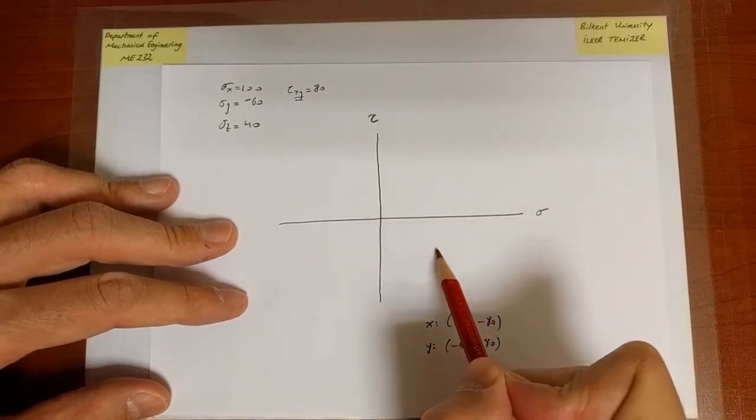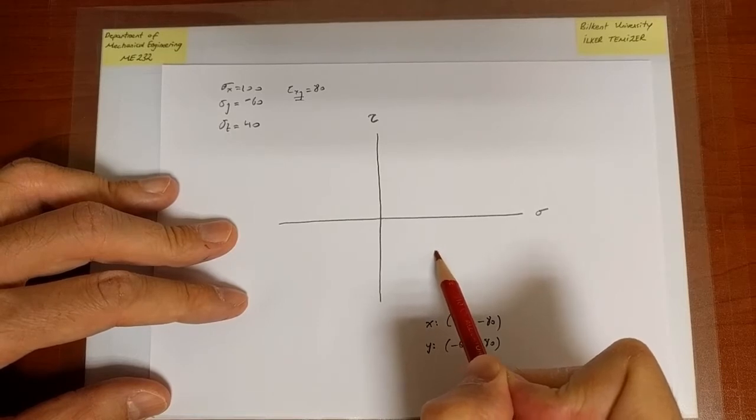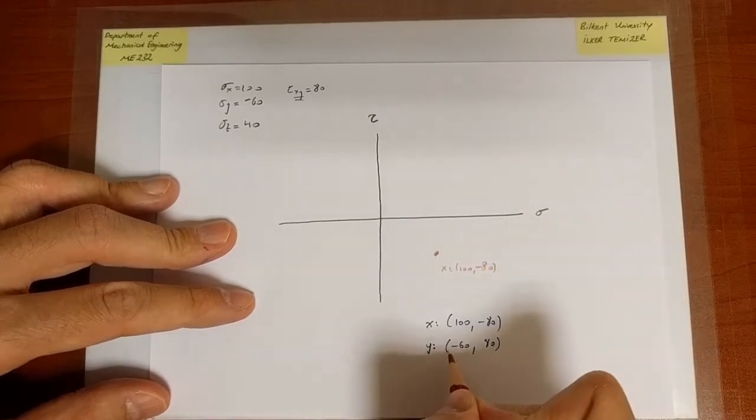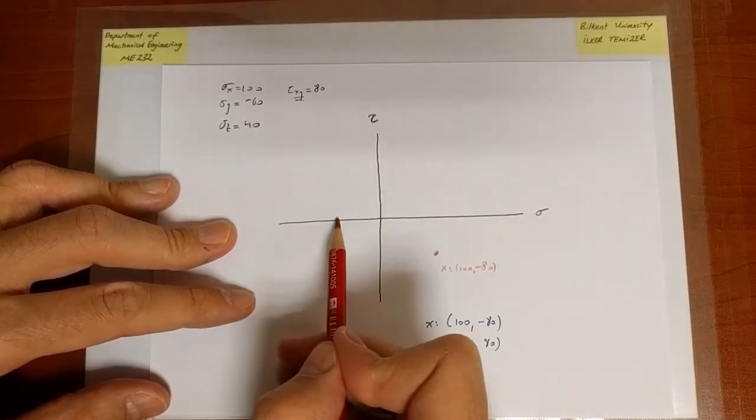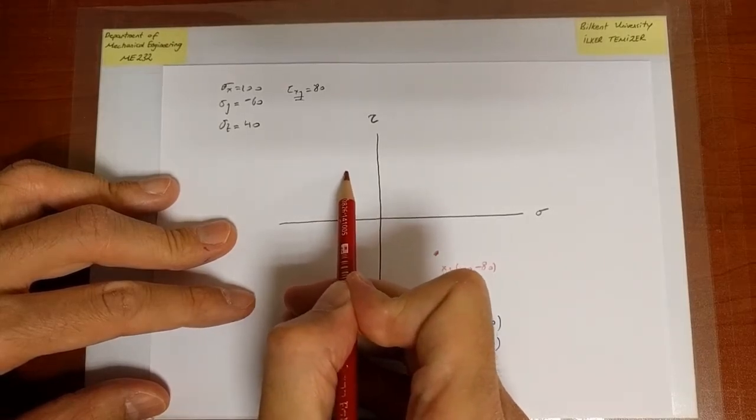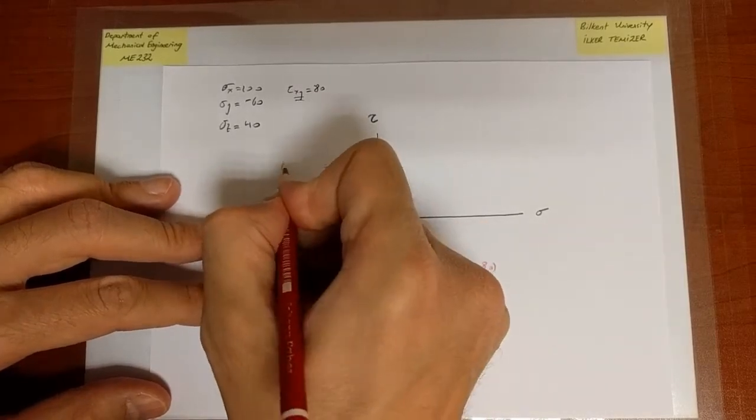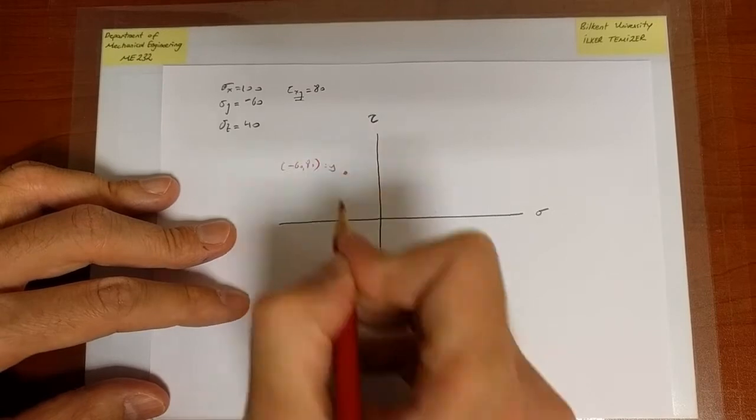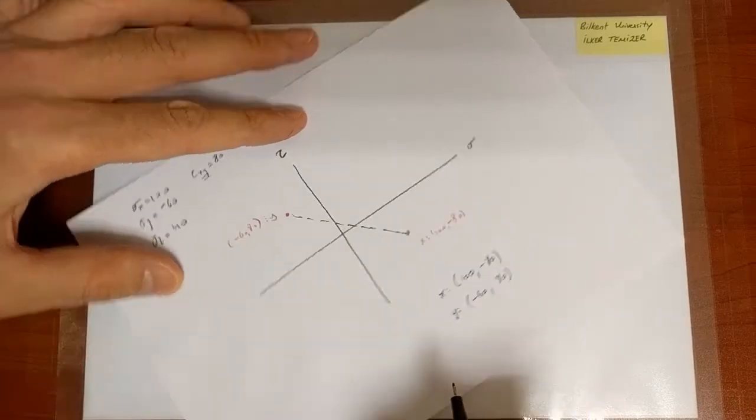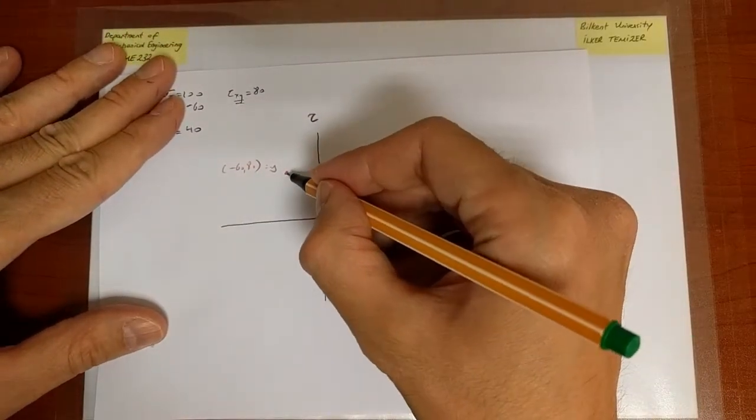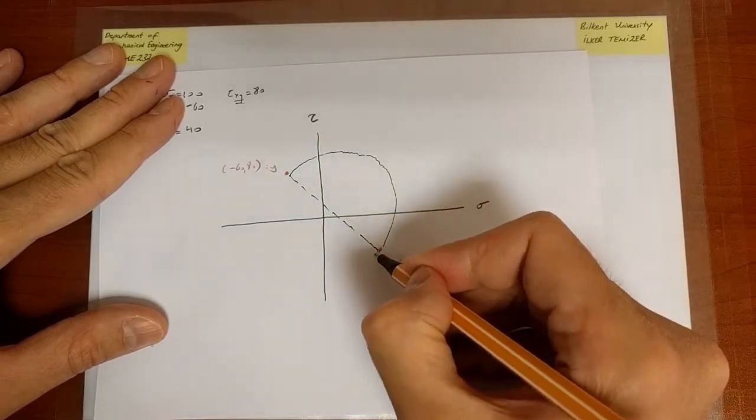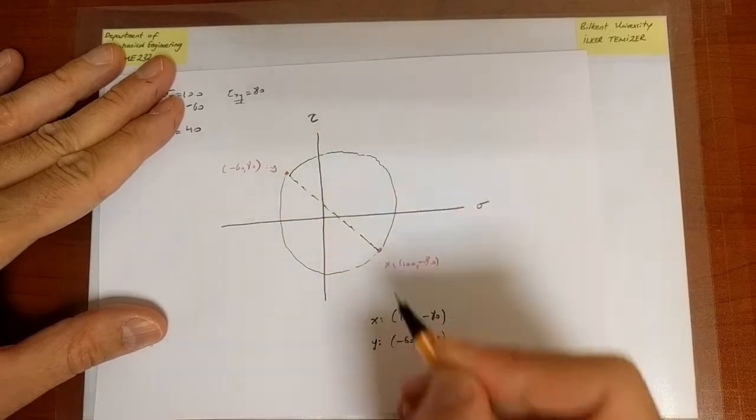So this is going to be 100 minus 80, let's say it's going to be over here, the x point. And the y point is going to be at minus 60, 80, let's say at that point. This is the y point, minus 60, 80. So I would go ahead and draw the diagonal, the diameter for my Mohr-Circle, and then I could draw the Mohr-Circle. And that's how it's going to look.